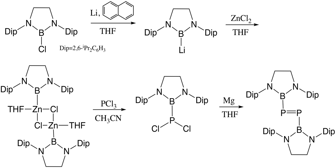Cleavage of C=C double bonds is very common in organic chemistry, while cleavage of unsaturated bonds between heavy group 14 and group 15 elements lacks investigation. Successful polarization of C=C multiple bonds reveals potential interconversion between π-bonding electrons and lone pair electrons in heavy group 14 and 15 compounds containing multiple bonds. Diphosphene, as a typical heavy-element multiple bond compound, can be cleaved by N-heterocyclic carbene (NHC), forming NHC-bound phosphinidenes.